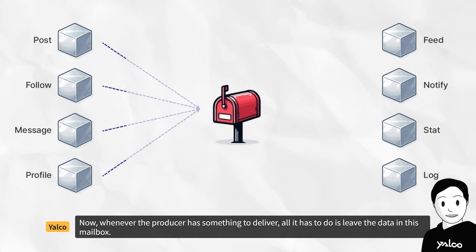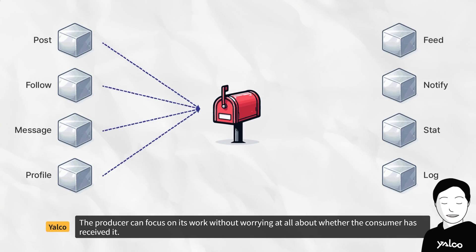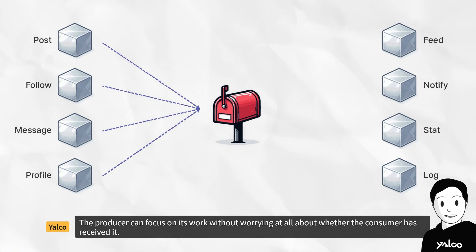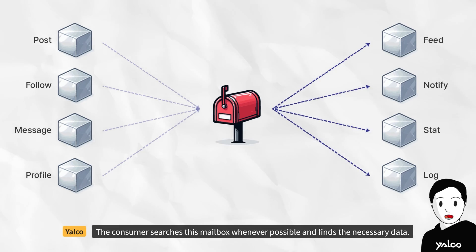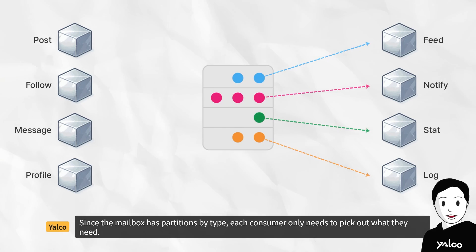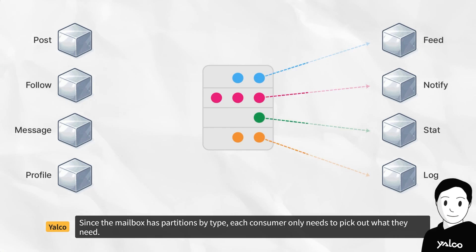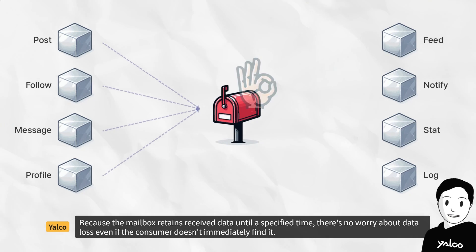Whenever the producer has something to deliver, all it has to do is leave the data in this mailbox. The producer can focus on its work without worrying at all about whether the consumer has received it. The consumer searches this mailbox whenever possible and finds the necessary data. Since the mailbox has partitions by type, each consumer only needs to pick out what they need.